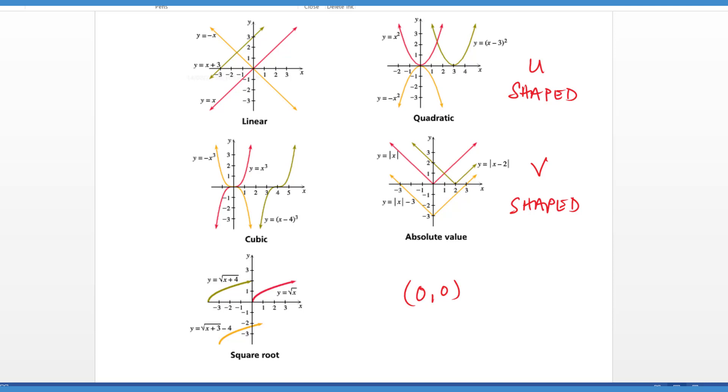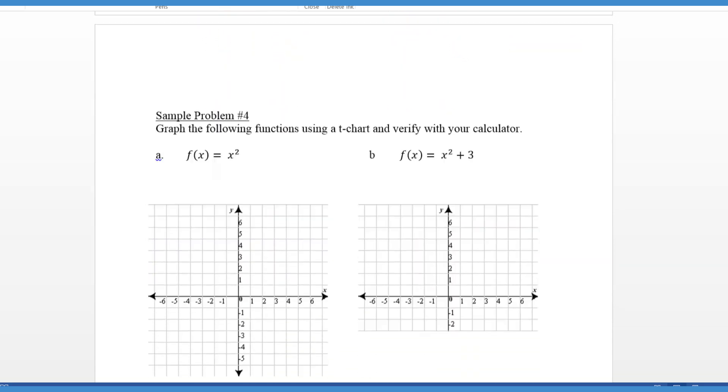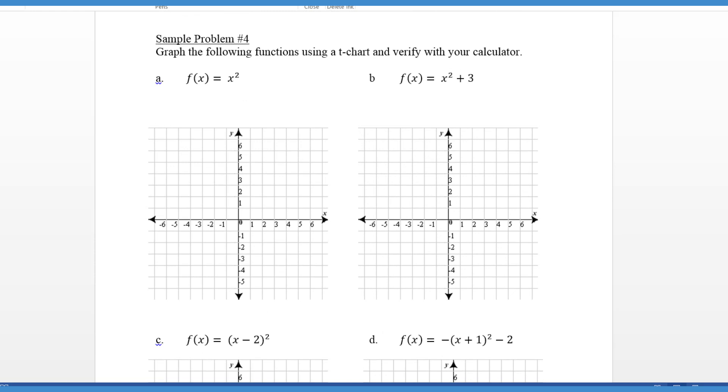Okay, so let's take a look. I've given you sample problem number four, and what I've asked you to do is to graph each of these functions. Now they're all quadratic, so they all ought to have some sort of U-shape. What I would like you to do is to t-chart a few points, and then after you graph the points and draw the quadratic, check it on your calculator. Generally speaking, if you remember the old t-chart, negative one, zero, and one are great places to start as far as picking x values is concerned. Remember you have the option to pick any x value that you want and find what the corresponding y value is.